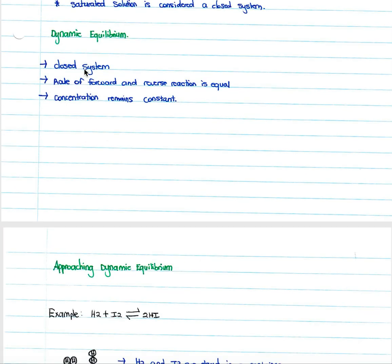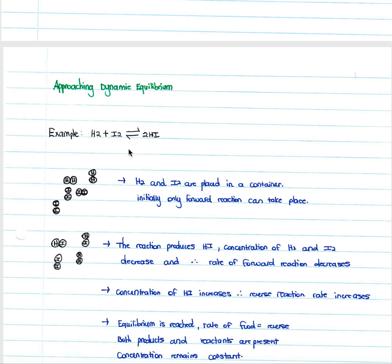When approaching dynamic equilibrium, take the example of H₂ + I₂ producing 2HI, with the reverse reaction where 2HI breaks down into H₂ + I₂. Initially, H₂ and I₂ are placed in a container. There is no HI initially, so only the forward reaction can take place. Because there is no HI initially, the reverse reaction cannot take place.